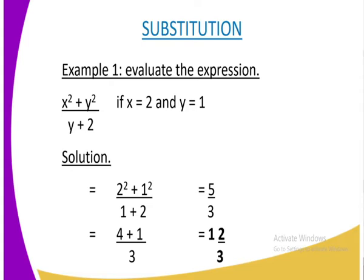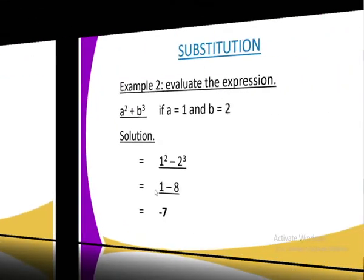We substitute it with 2. That is why our subtopic is on substitution. So where there is an x, we shall replace with 2, and our squared remains plus y, and y is 1, so we are going to get 1², all divided by y, whereby y is 1, then plus 2. So here, we are going to get 2², that is 4, plus 1, that is 5 over 3. Eventually, we cannot leave it as an improper fraction, so we are going to convert it to a mixed fraction, whereby 5 divided by 3, you are going to get 1 and 2 over 3.